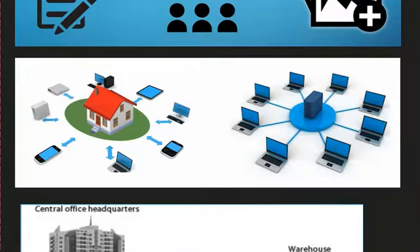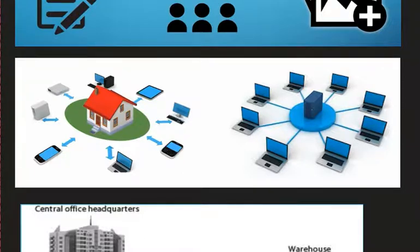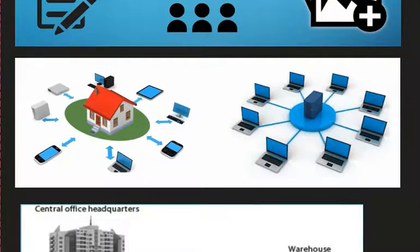A Local Area Network, or LAN, is defined as the connection within a specific location, such as a certain building. For example, if your company occupies multiple floors of a building — say the first floor, second floor, and up to the eighth or tenth floor — and you want to connect all those floors together, that could still be a Local Area Network.